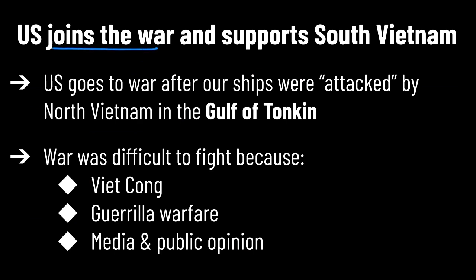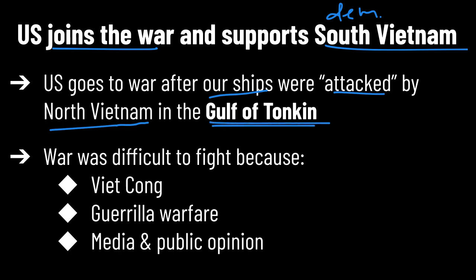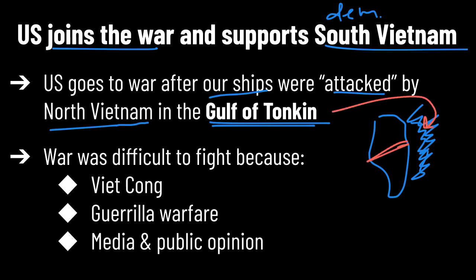The US joins the war and supports South Vietnam, the democratic side of this conflict. We go to war after an odd situation where we claim our ships were attacked by the North Vietnamese in an area of Southeast Asia called the Gulf of Tonkin — a body of water near North Vietnam. As we look back now, it's actually pretty clear that that never happened. There's really no evidence that we were ever attacked at all, so the core reason why the US goes to war is a little iffy at best.